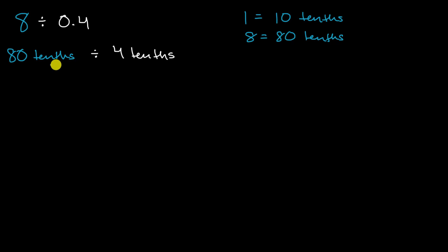So if I have 80 of something, and if I'm dividing it into groups of four of that something, how many equal groups am I going to have? Well, I'm going to have 80 divided by four groups. Or 80 divided by four, eight divided by four.